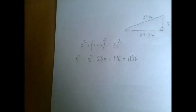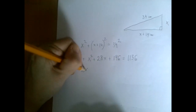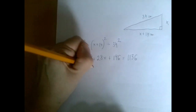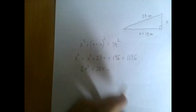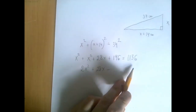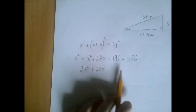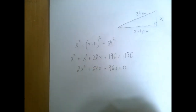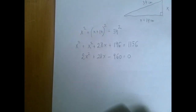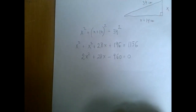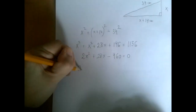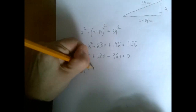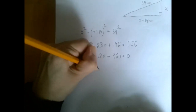We do what we usually do with quadratic equations. We have 2x squared plus 28x, and because this equation is quadratic, we're going to have to reduce one side to zero. We can divide both sides by two — I'm just going to factor it out; you can divide if you want.